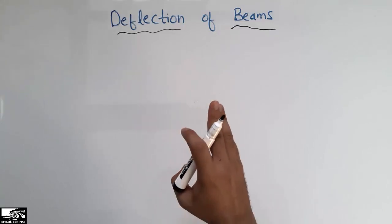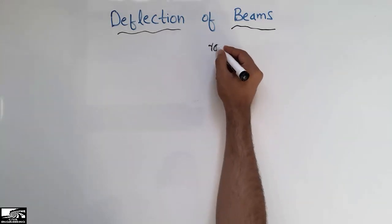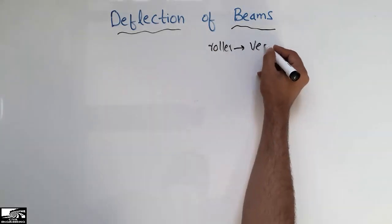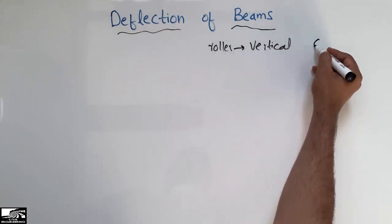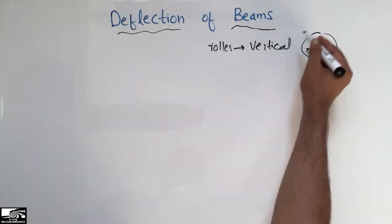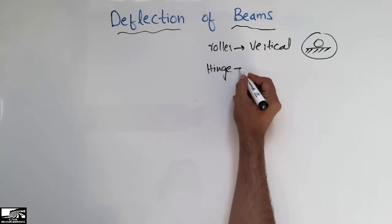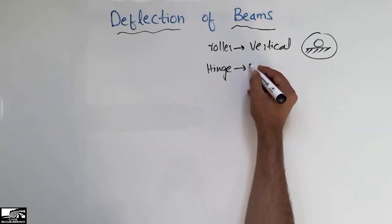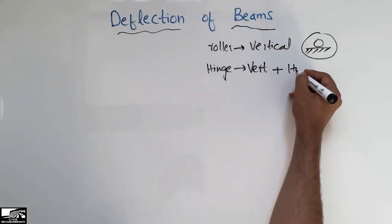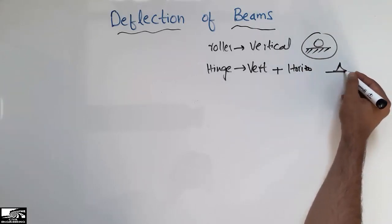First, we should know about three important support conditions. The first one is the roller support, which is used to support only vertical loads, and it is usually represented by this symbol. The second one is the hinge support. The hinge support is used to take horizontal as well as vertical loads, represented by a triangle with a fixed line.